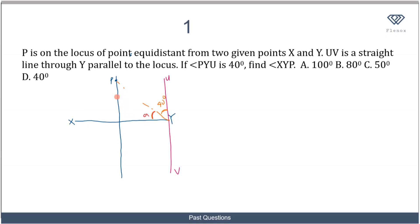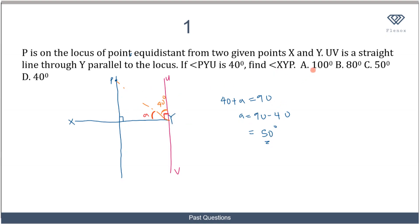The locus is a perpendicular bisector, so the angle between XY and the locus is 90 degrees. Since line UV is parallel to the locus, the angle at Y between UV and XY is also 90 degrees. Therefore, 40 plus A equals 90 degrees, giving A equals 90 minus 40, which is 50 degrees. So angle XYP is 50 degrees, and the correct option is C.